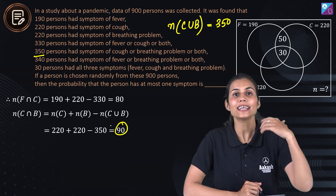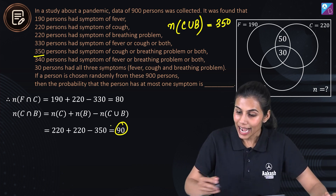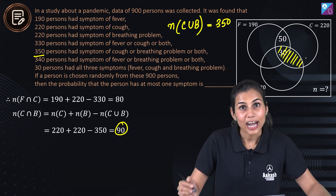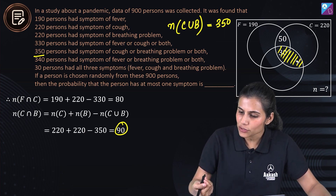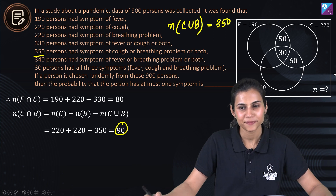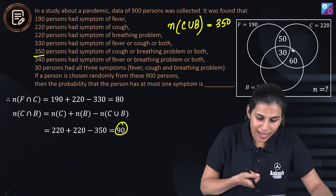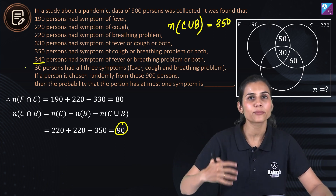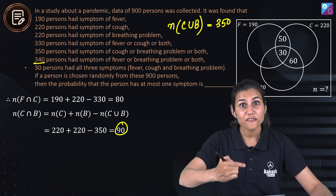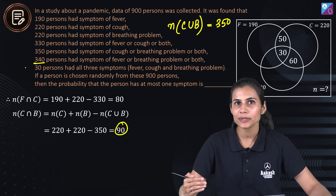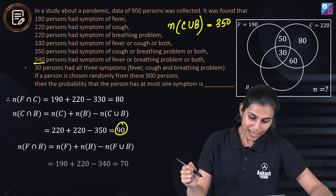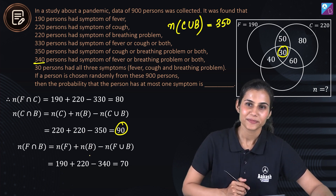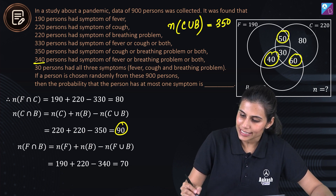So the number of members having cough as well as breathing problems is 90. Out of which 30 is already occupied by the all-three region, so 90 − 30 = 60 goes in the cough-breathing only region. Similarly, 340 persons have symptoms of fever or breathing problems or both, so F∩B has 70 members. Out of which 30 has been used, leaving 40 in the fever-breathing only region.